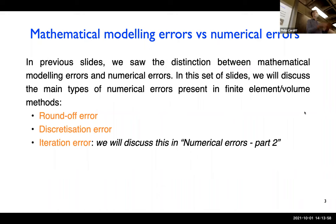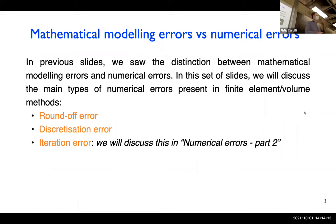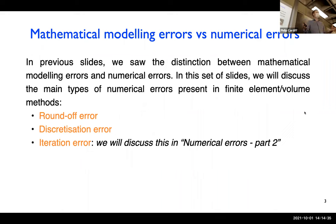If you're not careful, those errors could dominate the solution — you could set everything up perfectly and still get a very wrong answer. The three types we're going to talk about are: roundoff error, discretization error, and iteration error. Sometimes discretization error is called truncation error, but people also call roundoff error truncation error, so I'm going to avoid that ambiguous term.